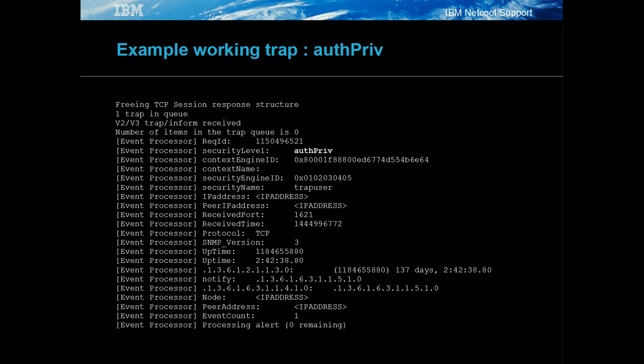In the debug log file, the event details are logged: protocol, tcp; SNMP version, 3; security level, auth priv.